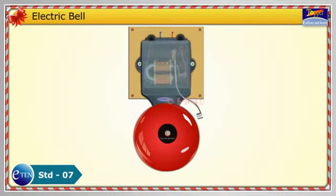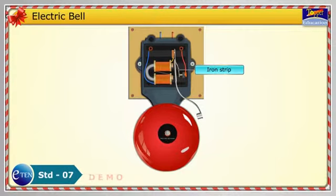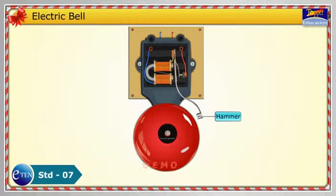An electric bell consists of a coil of wire wound on an iron piece. This coil acts as an electromagnet. An iron strip with a hammer at one end is kept close to the coil. There is a contact screw near the iron strip.